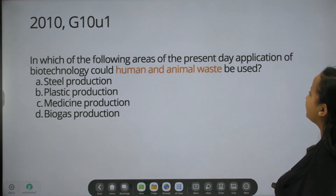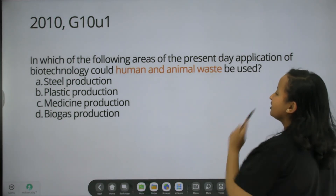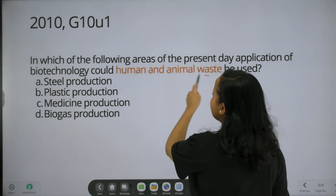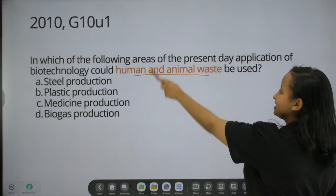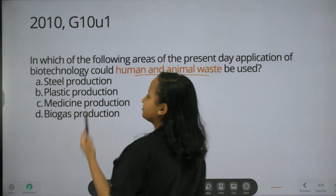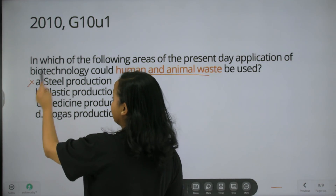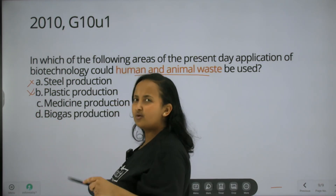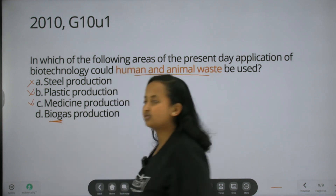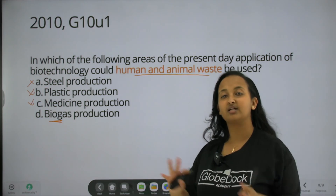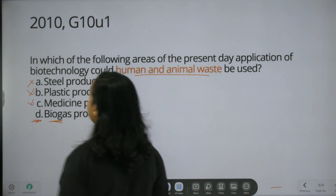In which of the following areas of the present-day application of biotechnology could human and animal waste be used? Human and animal waste can be used in this area. The key word is that these words apply. Still production — in this example, human and animal waste can be used. Plastic and waste can also be used. Biogas — human and animal waste can be used to produce biogas.